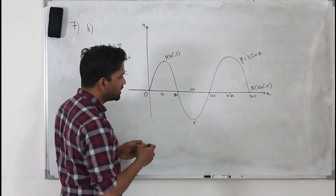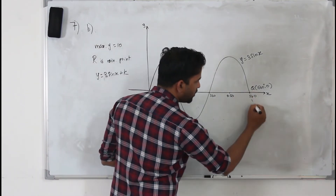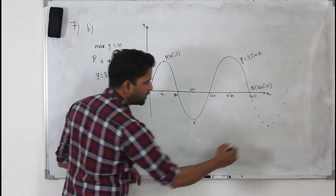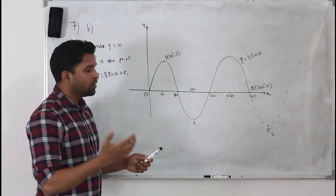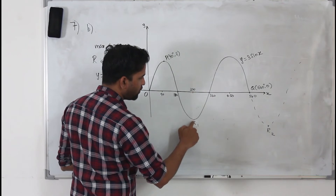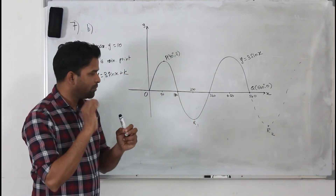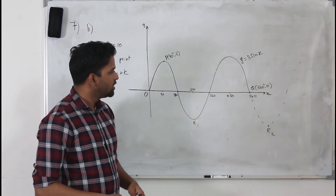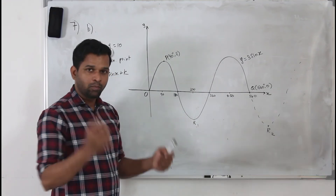Having the smallest x value means there will be several minimum points on this curve if you continue it — R1, R2, and so on. For the smallest positive x value, we are talking about the first minimum point, which occurs at x = 270 degrees. That is the one with the smaller x value, since subsequent minimum points have larger x coordinates.